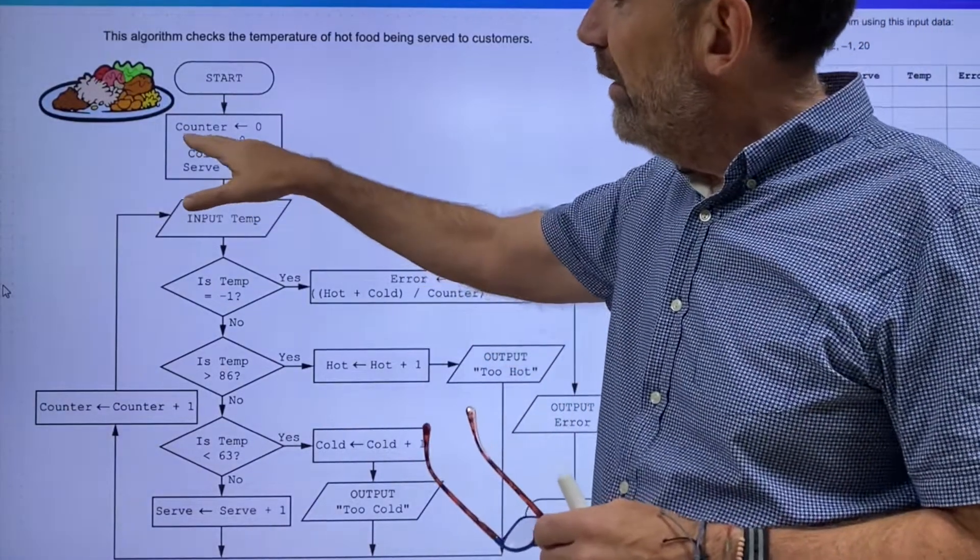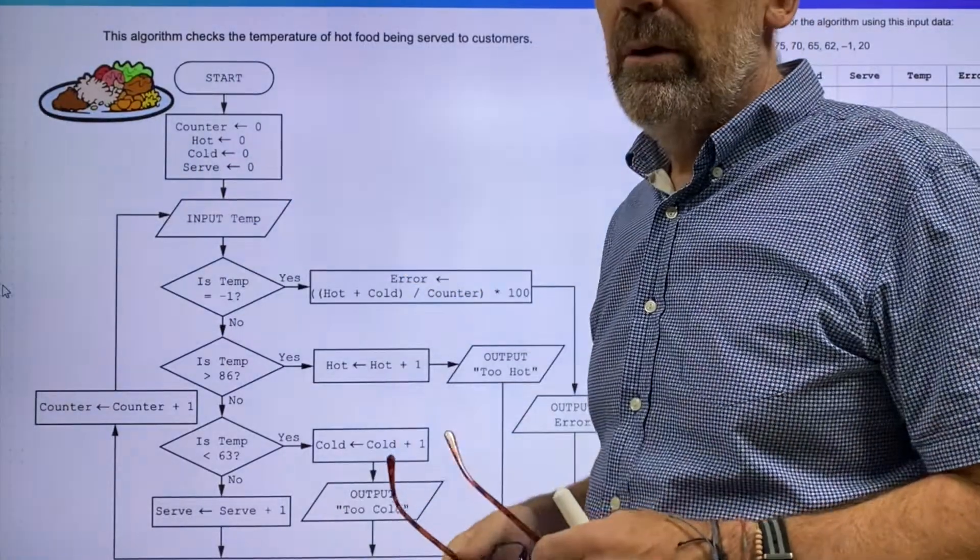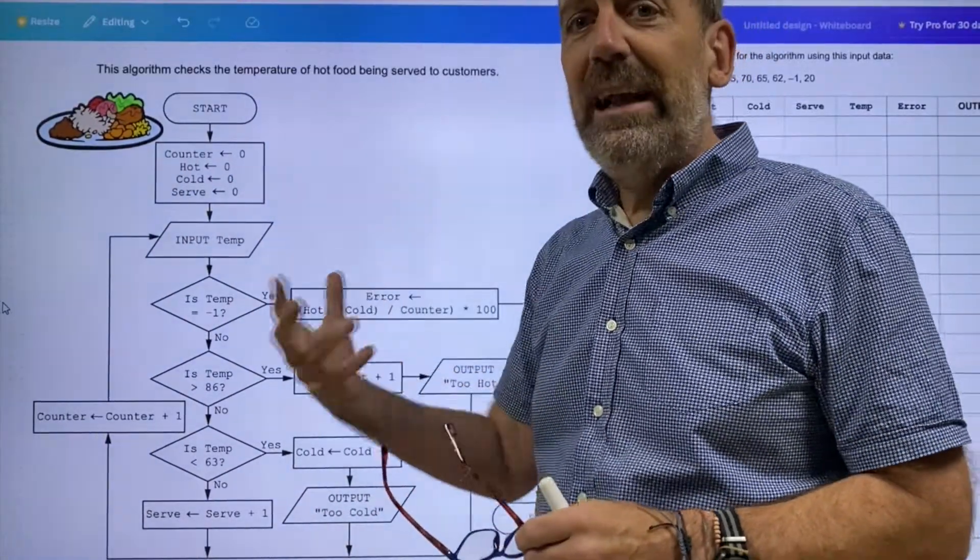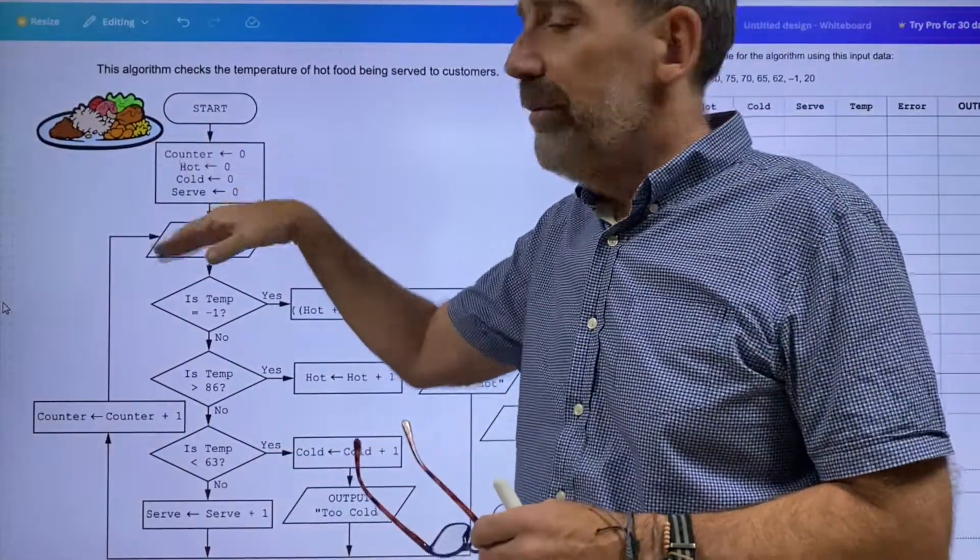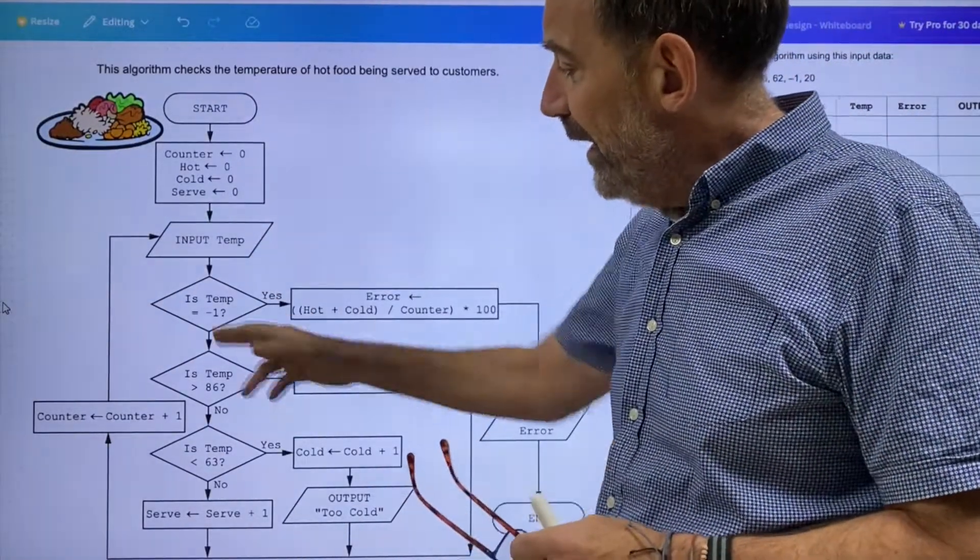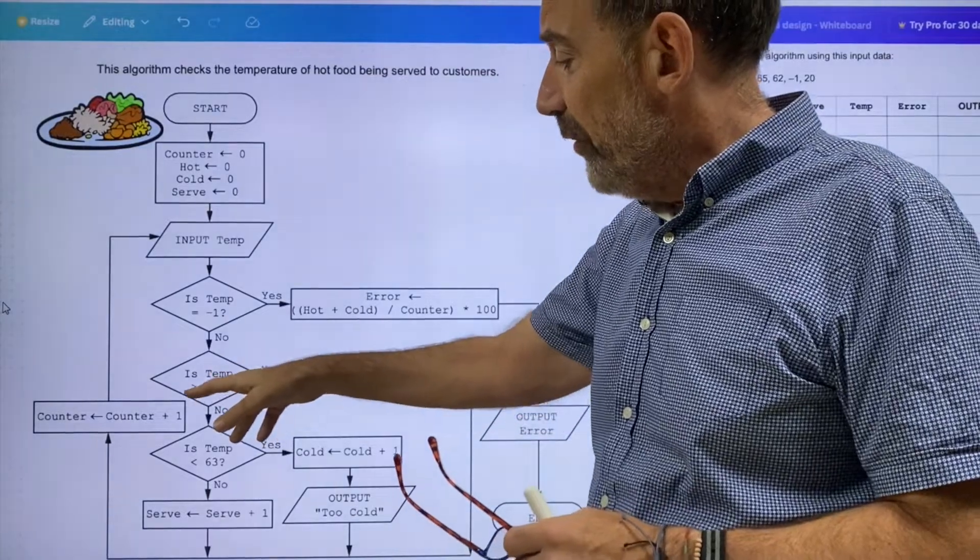First of all, we've got to start with setting a counter, hot, cold, and serve all to zero. When you think about that straight away, we're going to do some kind of calculation based on adding up, totaling, and different values.